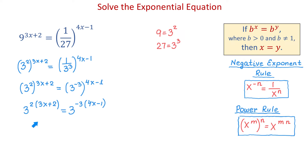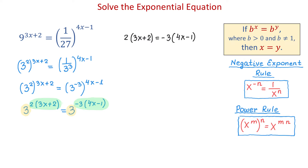Now, once the bases are the same, we will set the exponents equal to each other. So we will write that 2 times 3x plus 2 equals negative 3 times 4x minus 1. Here, we will use the distributive property to remove the parentheses. Then 2 times 3x is 6x, and 2 times 2 is 4. On the right side, negative 3 times 4x is negative 12x, and negative 3 times negative 1 is plus 3.